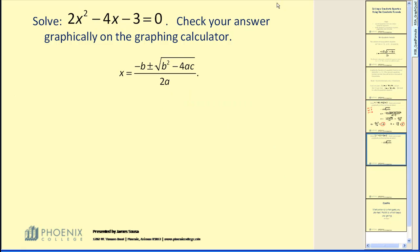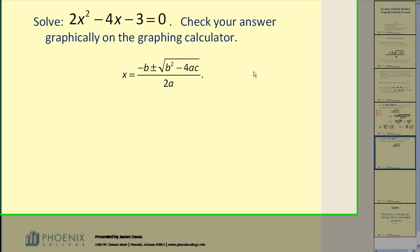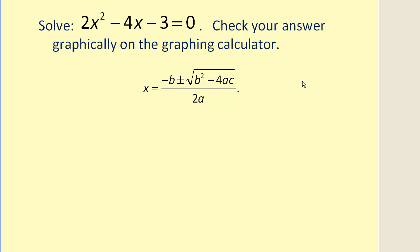Let's try one more. Solve two x squared minus four x minus three equals zero. Check your answer graphically on the graphing calculator.